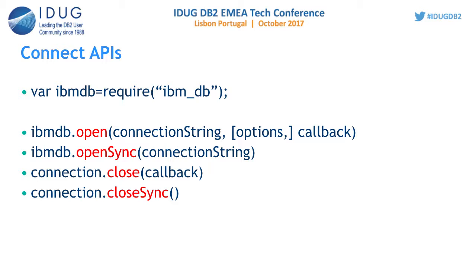First of all, we need a database connection. This driver comes with two connection APIs: ibm_db.openSync and ibm_db.open. By default, all APIs of this package are asynchronous in nature.